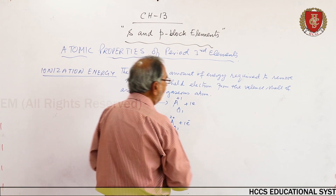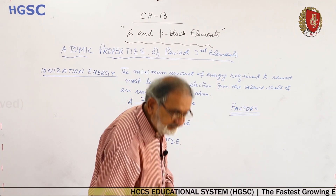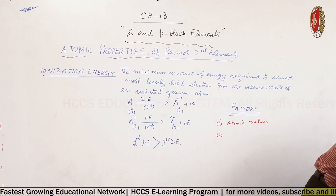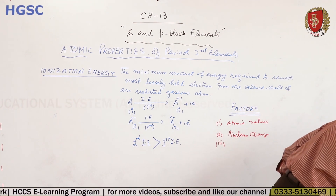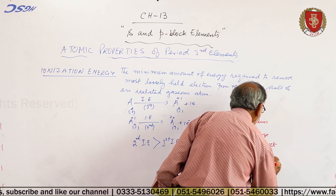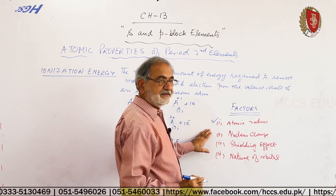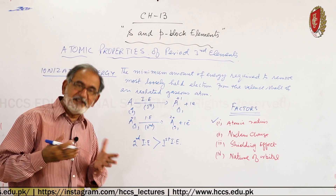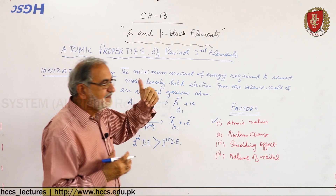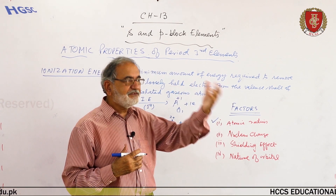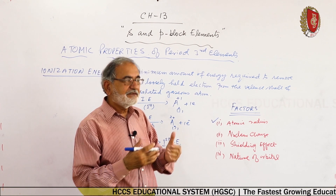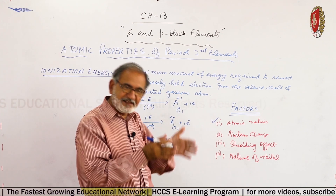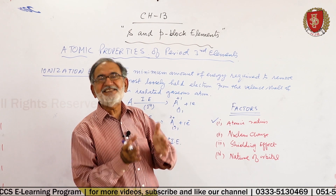The factors which affect ionization energy are: number one, atomic radius; number two, nuclear charge; number three, shielding effect; and number four, nature of orbital. Regarding atomic radius — the larger the atomic radius, the farther the valence electron is from the nucleus, so the attraction is weaker and it is easier to remove. As atomic size decreases, the electron comes closer to the nucleus, attraction increases, and more energy is needed to remove it.